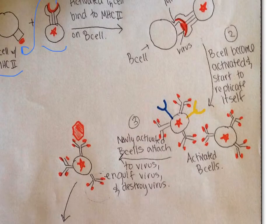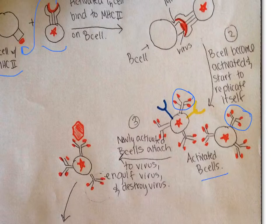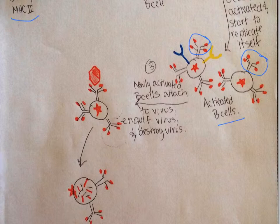And then after that activated T cell comes together with the B cell, now is when our B cell is going to become activated. When our B cell becomes activated, then it's going to start to replicate itself and make more of itself. So we talk about what that means. And all of those B cells are now going to be specific for that virus that we're looking for.